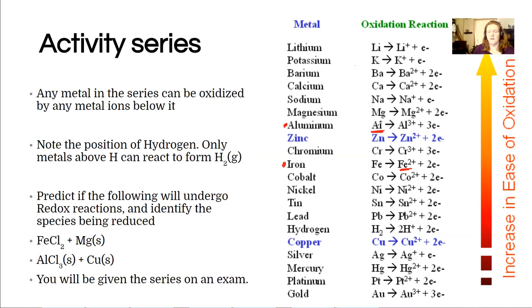So this says any metal in the series can be oxidized by any metal ions below it. So this tells us that the aluminum being that's the metal being above the ion, it will react. If I tried to take, say, the iron ion and react it with nickel, that would be no reaction. Because what has to be true is the metal has to be above the ion in this activity series for it to react.